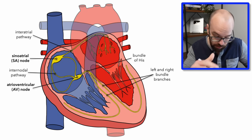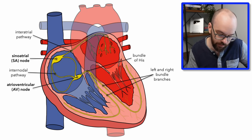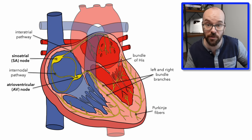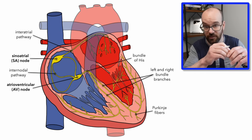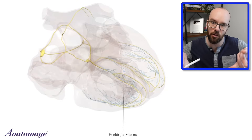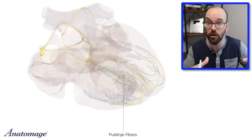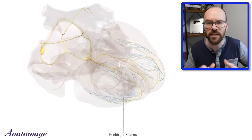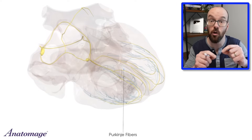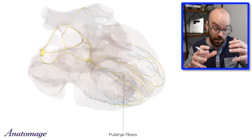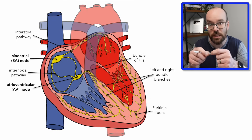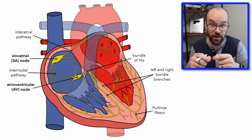Extending from the left and right bundle branches are the Purkinje fibers, which take the signal and spread it throughout the muscle of the right and left ventricles. This conducts the signal many times faster than if we relied only on the ventricular syncytium — the connections between all the cardiac cells.